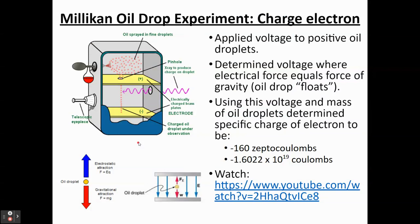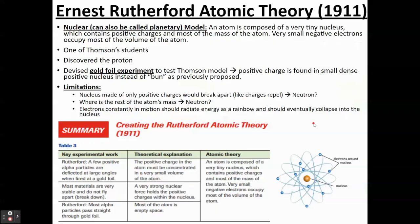Now this one — the Millikan oil drop experiment — I don't expect you to know all the details. It was used to find the charge and mass of an electron. It's a really intricate experiment — if you're a physics fan, you'd see the connection between chemistry and physics with a bunch of forces being applied. Thomson's model wasn't necessarily correct either. When you have a model, scientists will test it — that's what science is about. We test models to see if they support and explain things, or sometimes find the model needs to be modified.